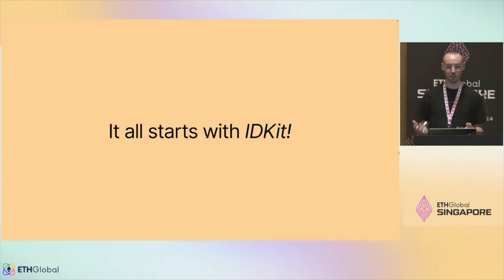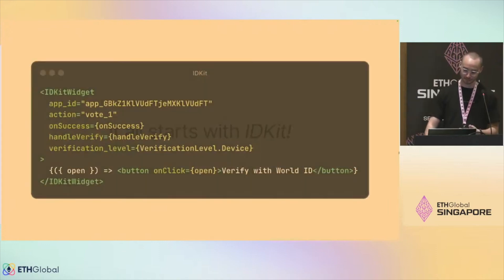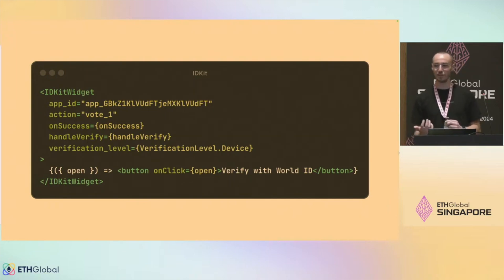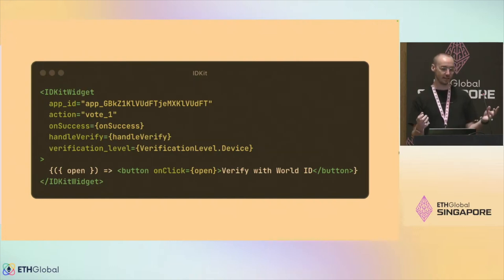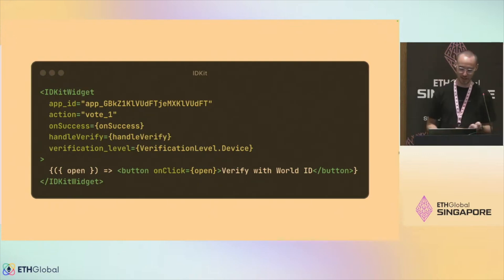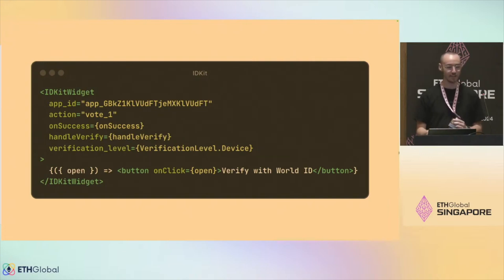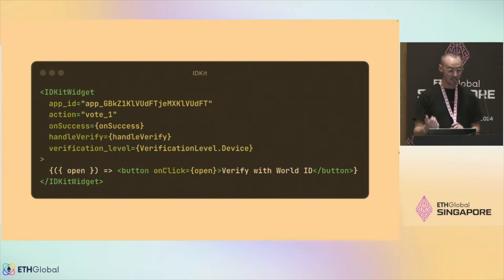Everything for your integration with WorldID starts with IDKit. IDKit is typically used as a React widget. We have a vanilla JavaScript version if you're interested. We've also recently launched Swift and Kotlin libraries, and we have a Rust library that is occasionally used. If you're not using the React or vanilla JavaScript version, come see me at the booth. The React widget takes your app ID from the developer portal, the action you configure in the developer portal — you can create multiple actions for an app ID — plus onSuccess and handleVerify callback functions, and you can set the minimum verification level required.